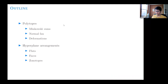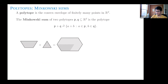Let me start right away and define a polytope, which I guess we're familiar with. A polytope is just a convex hull of finitely many points in R^d. An important operation between polytopes is that of Minkowski sum. The Minkowski sum of two polytopes P and Q is again a polytope, and it consists of all points of the form A plus B, where A is a point in the first polytope and B is a point in the second polytope.